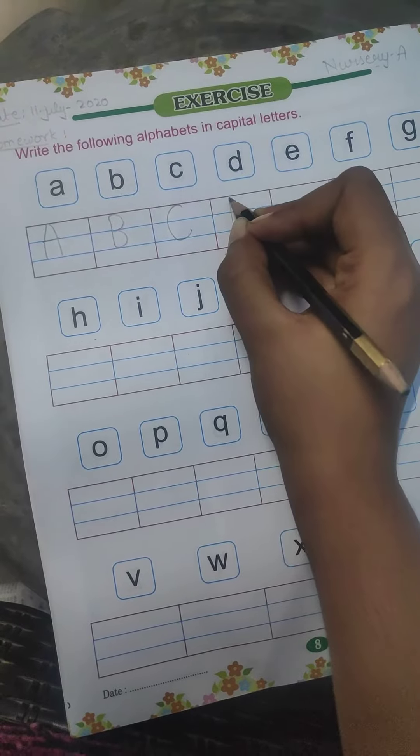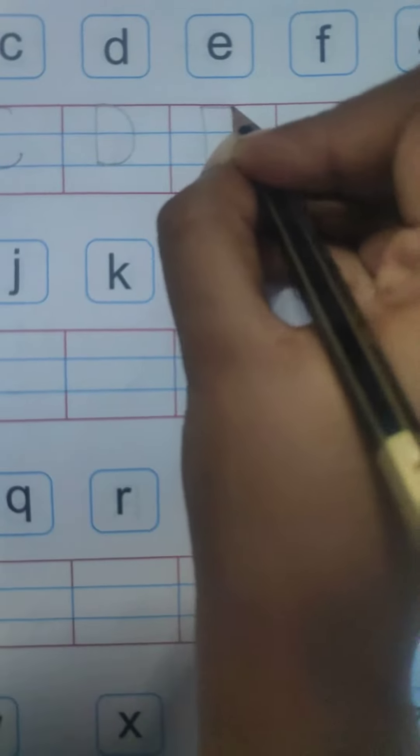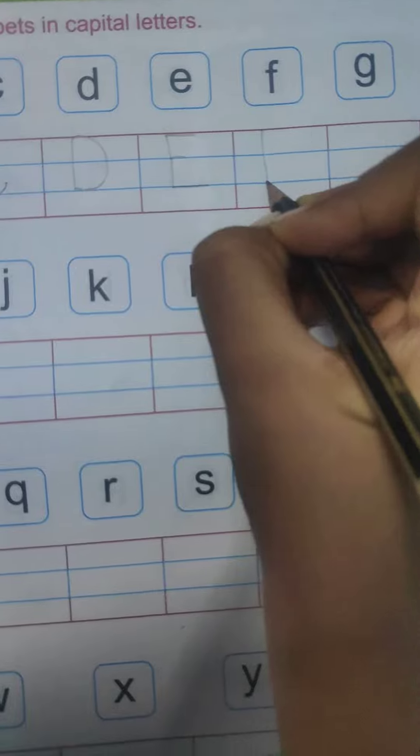D. D for dog. E. E for elephant. F. F for fish.